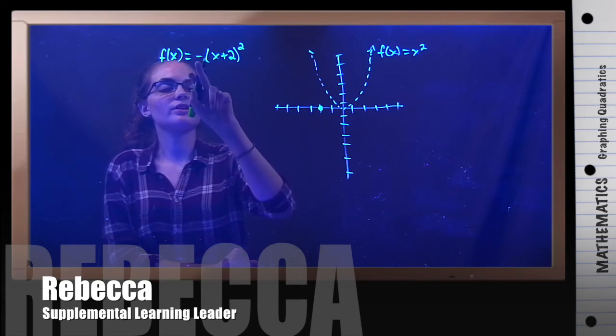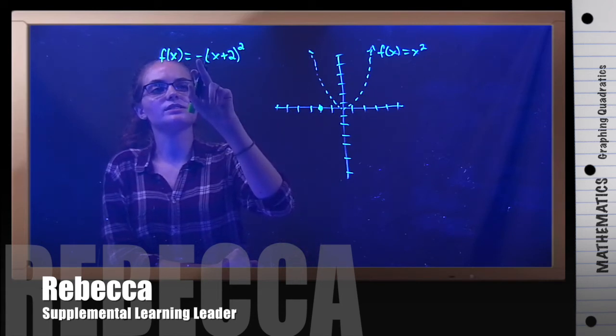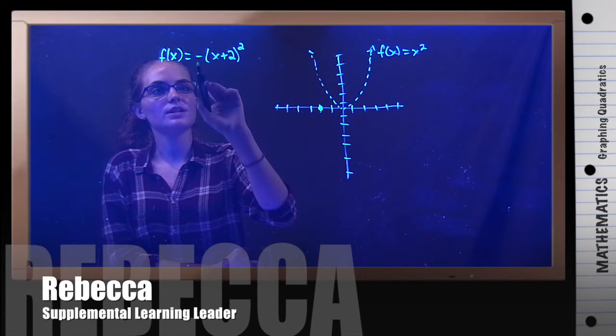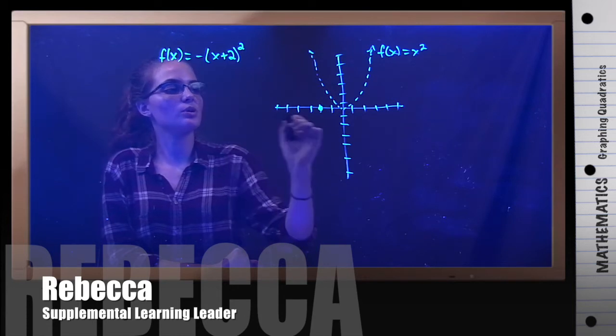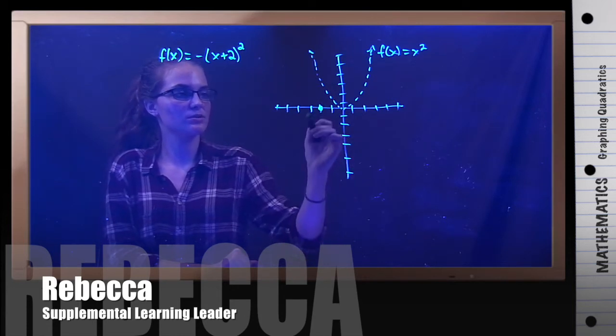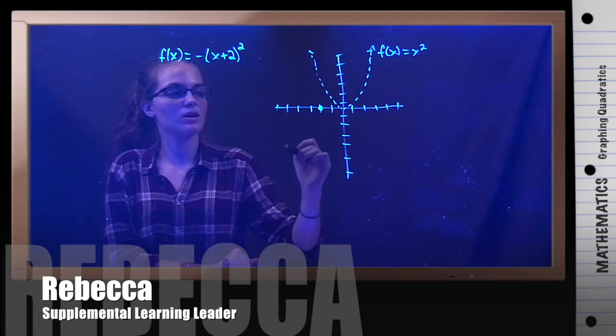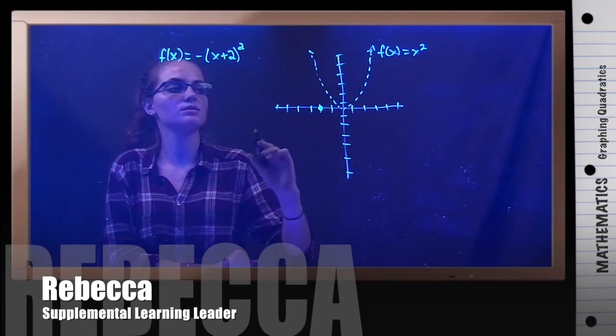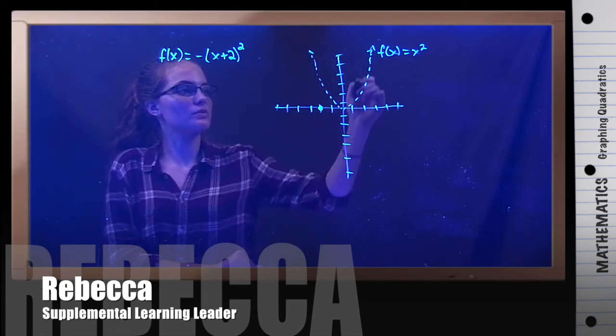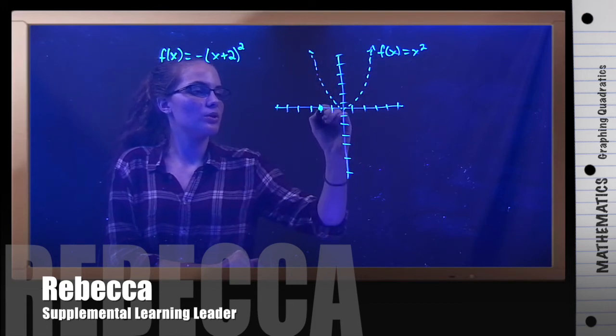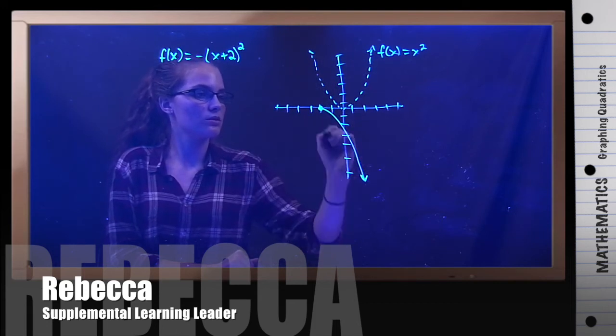Now, the other thing we have to take into consideration is this negative out here. Anytime there's a negative, you want to flip it upside down. Make it reflect about the x-axis. So it's normally right side up like this, but we're going to draw it like this.